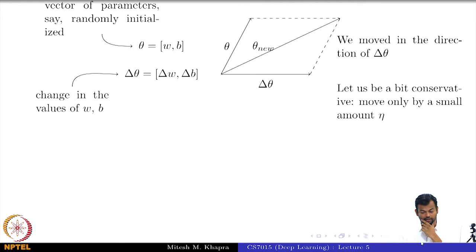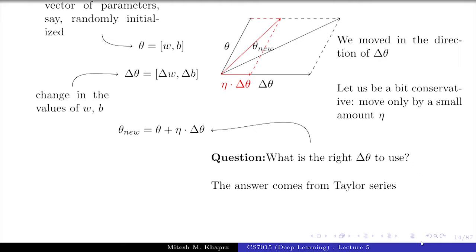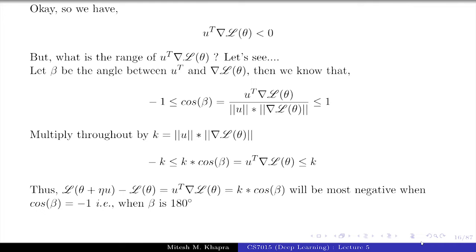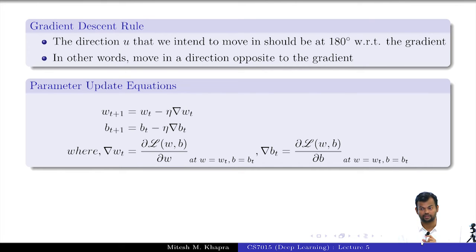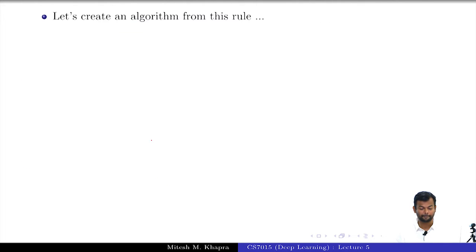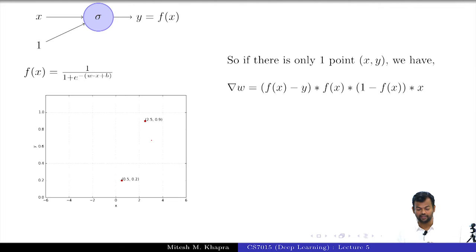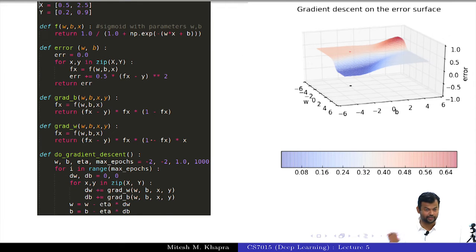This better way we realized could be arrived at from a very principled solution starting from Taylor series. We went through the derivation and finally came up with this rule: move in the direction opposite to the gradient. We also defined carefully what this quantity means—the partial derivative with respect to w evaluated at a particular weight comma bias configuration, because this is an iterative process. We then created an algorithm out of this, and when we ran this algorithm, let me slow down. When we ran this algorithm, let's see what was happening.